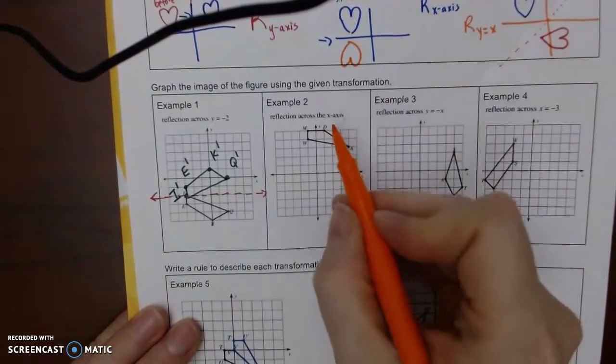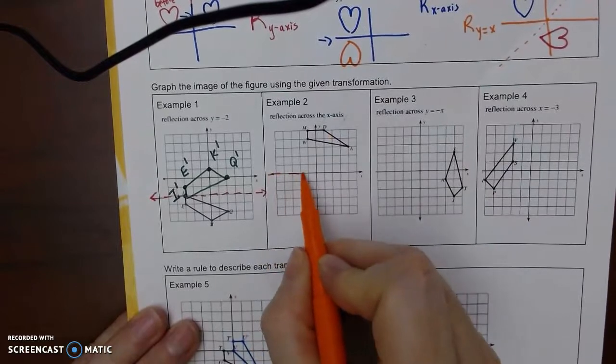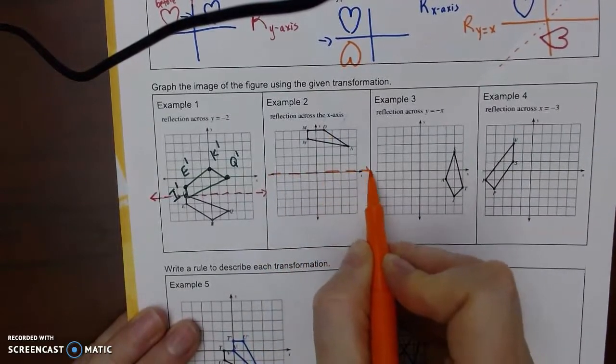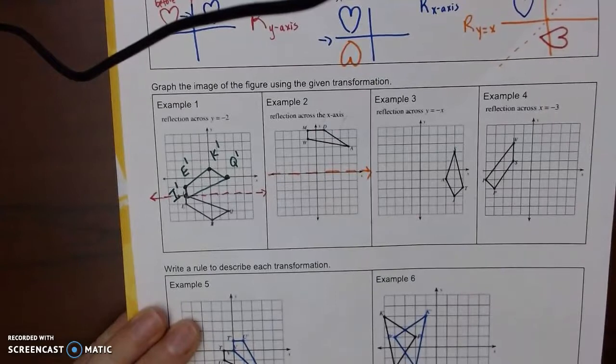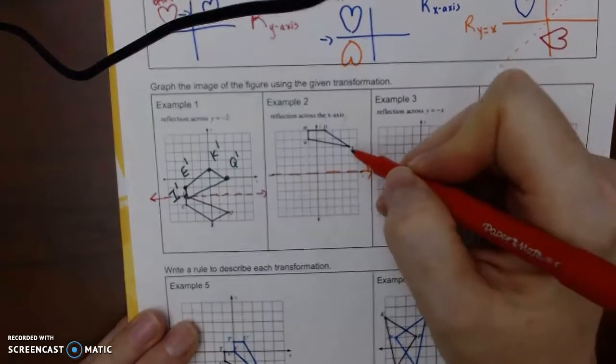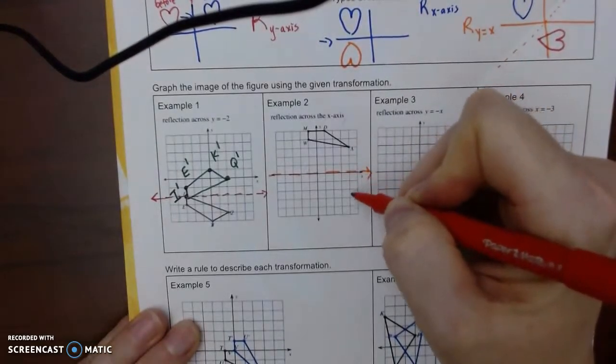All right, so let's try example two, the x-axis. So that's this, and I'm going to do the same idea. A is three up, so I'm going to go three down.